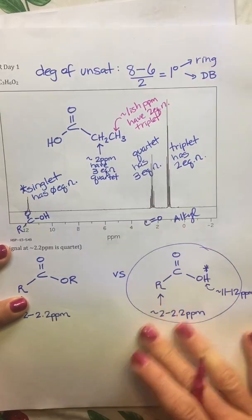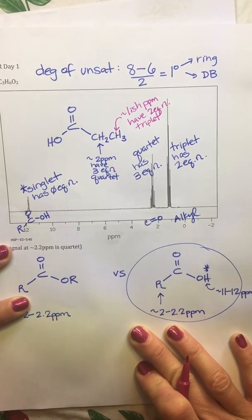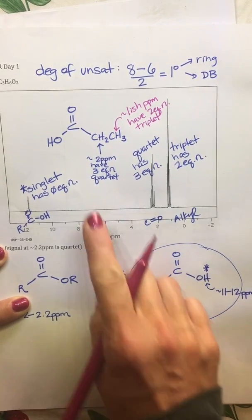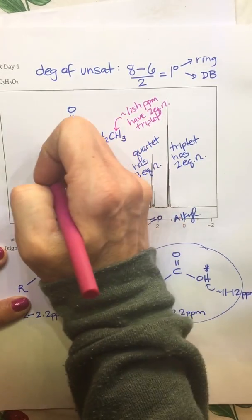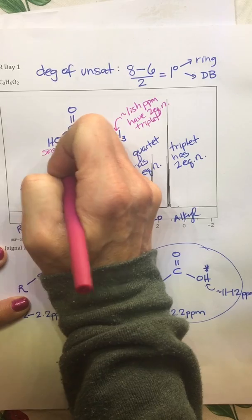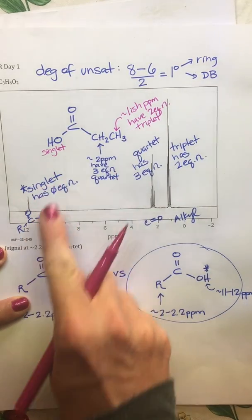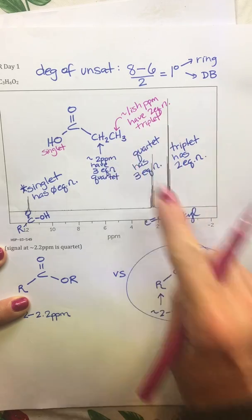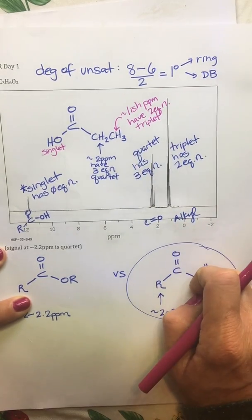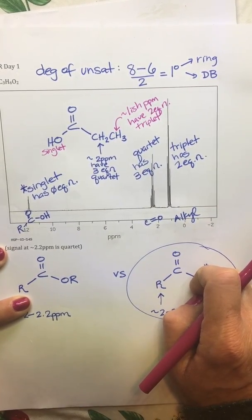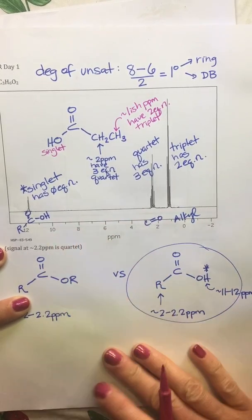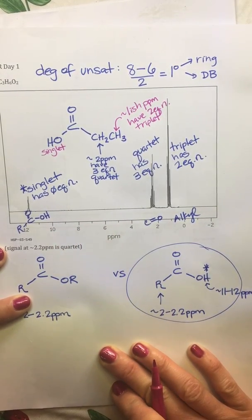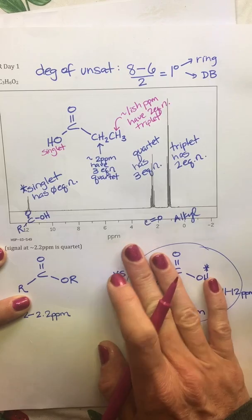And these guys have two equivalent neighbors. So these hydrogens have two equivalent neighbors, so that's giving us the triplet, because that n plus one rule we talked about - two plus one is three, that's giving a triplet. And of course all of our splitting patterns, this was a singlet, our singlet at 11, our quartet at 2, and our triplet at 1. Everything matches from splitting pattern to chemical shifts. Sometimes students get so focused just on the splitting pattern that they forget to check the chemical shifts.